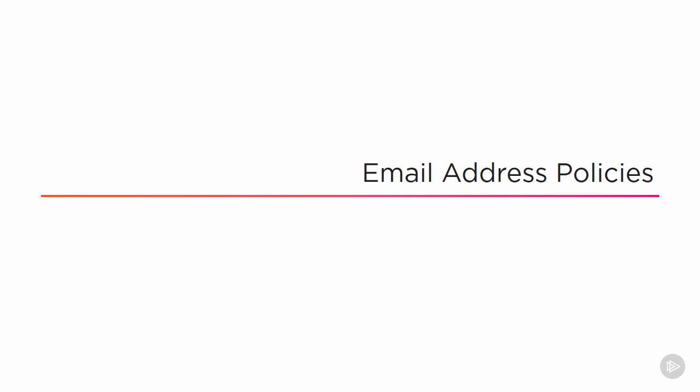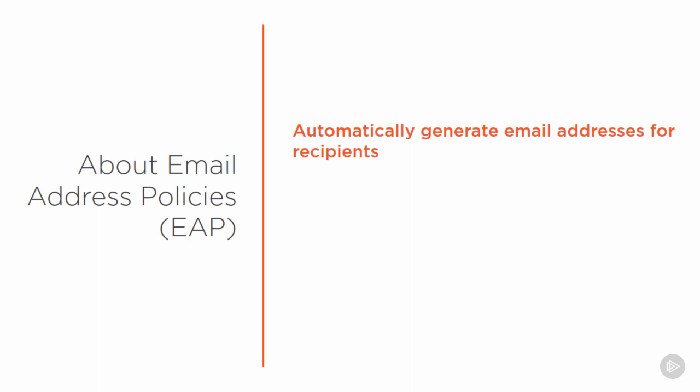Now let's take a look at Email Address Policies. Email address policies are responsible for automatically generating email addresses for recipients in the organization. There is one default email address policy that gets created by Exchange setup, and by default it will assign the default accepted domain to all recipients. That accepted domain will be whatever the Active Directory forest name is — for Globomantics, the forest name is globomantics.biz, which is why globomantics.biz was already in there as an accepted domain.